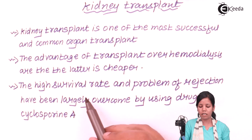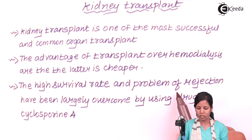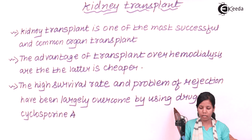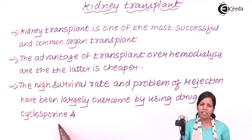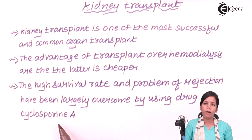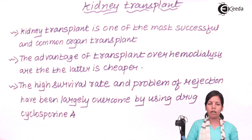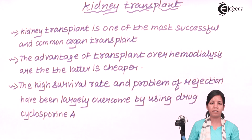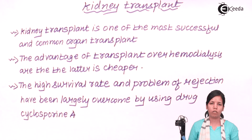The high survival rate and the problem of rejection have been largely overcome by using a drug known as cyclosporine A, which is precisely used during kidney transplant or whenever graft transplant is done. A patient undergoing kidney transplant needs to find a proper willing donor. Also, within 48 hours of one's death, the kidney must be removed and preserved properly so that it can be transplanted to the required individual.